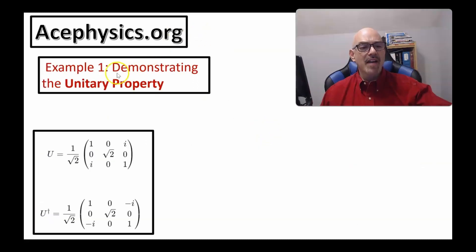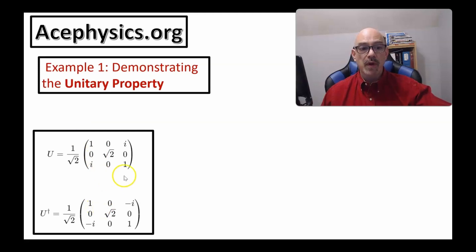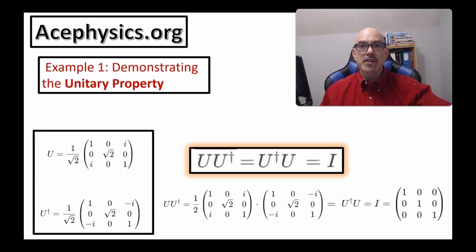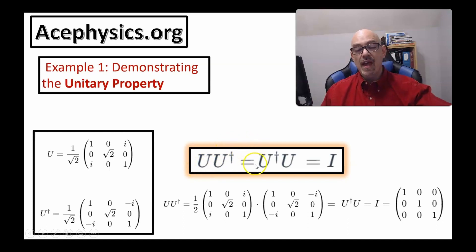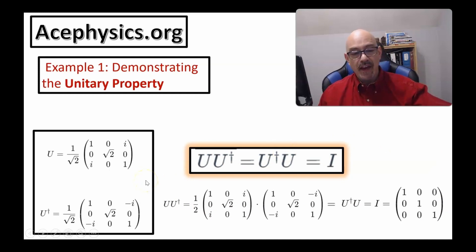On this slide I have an example demonstrating the unitary property. Here's the matrix U, and below it I wrote U dagger — you take the transpose of U and then the complex conjugate. If U is unitary, it must satisfy the condition where U U dagger equals U dagger U equals the identity, and the computation shows that it does satisfy that.